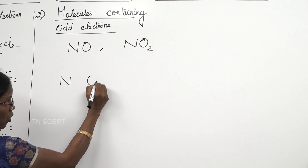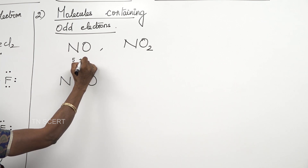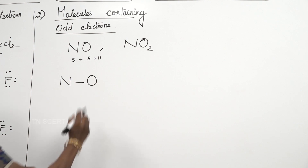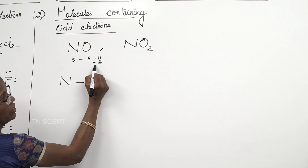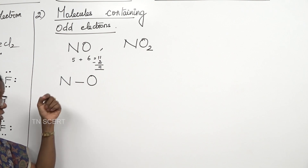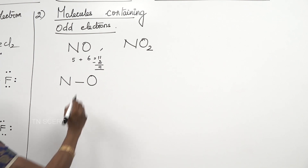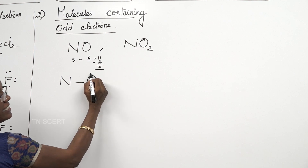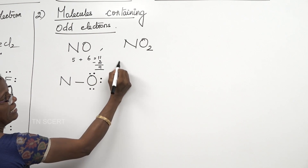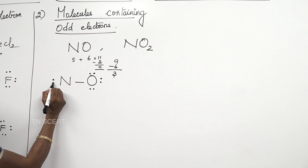For nitric oxide, place nitrogen and oxygen with a bond between them. Nitrogen has 5 valence electrons and oxygen has 6, giving a total of 11 electrons. After using 2 for the bond, 9 electrons remain. Starting from oxygen (more electronegative), we place 2 electrons in the bond plus 6 lone pair electrons, then give the remaining 3 electrons — 2 as a lone pair on nitrogen and 1 unpaired electron on nitrogen.